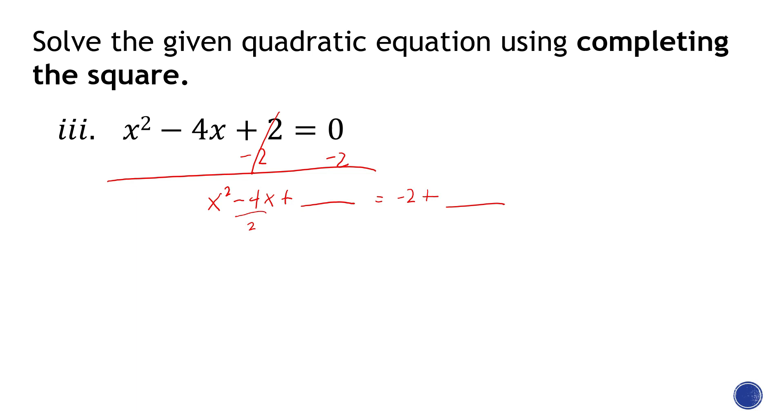The numerical coefficient. So it's -2, and then square that, that gives us 4, that 4 goes there, and whatever you add on the left side, you also add that on the right side.